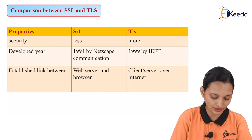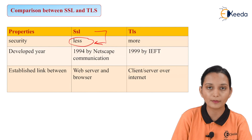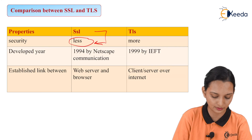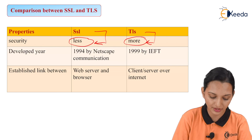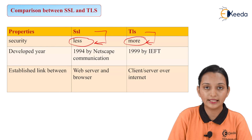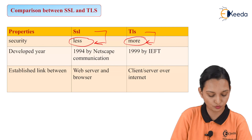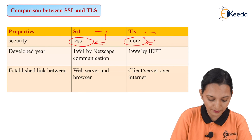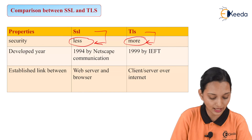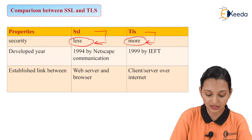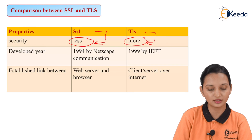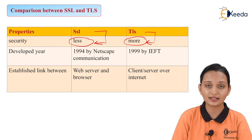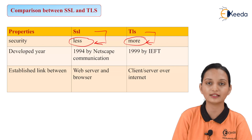Security is less in SSL — this is the main drawback of SSL — and hence TLS was developed with more security. SSL was developed in 1994 by Netscape Communications, while TLS was developed in 1999 by IETF. An established link between web server and browser can be done with SSL, while an established link between client and server over the internet can be done with TLS. These are a few properties comparing SSL with TLS, and the conclusion is that TLS is the updated version of SSL and it is more secure.